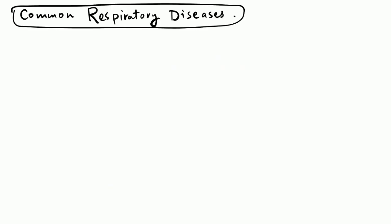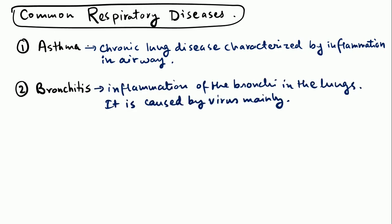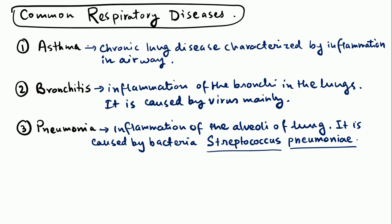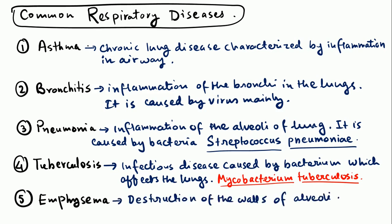Some common respiratory diseases: Asthma is a chronic lung disease characterized by inflammation in the airway. Bronchitis is the inflammation of the bronchi, caused by a virus. Pneumonia is the inflammation of the alveoli, caused by the bacterium Streptococcus pneumoniae. Tuberculosis is an infectious bacterial disease caused by Mycobacterium tuberculosis, which affects the lungs. Emphysema is the destruction of the walls of the alveoli.